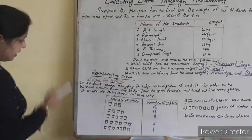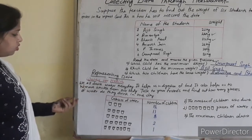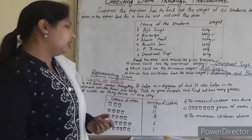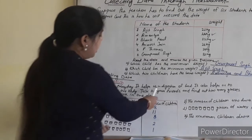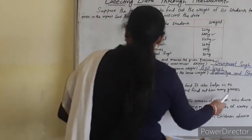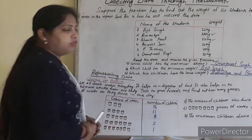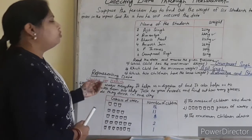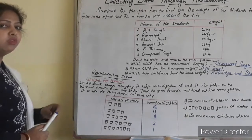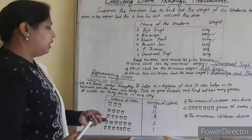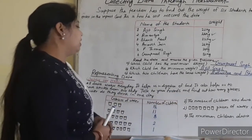Representing data — how do you represent data? Here is one question that shows you the importance of water in our body. We all drink water every day and it helps us in digestion of food. It also helps us to remove waste from our body. So water is very important for our health. The question is: talk to your friends and find out how many glasses of water they drink in one day.